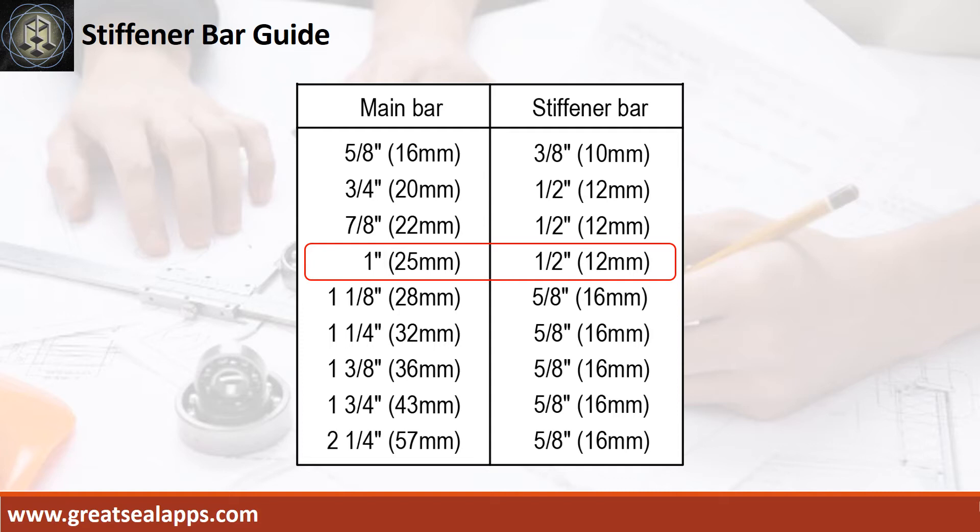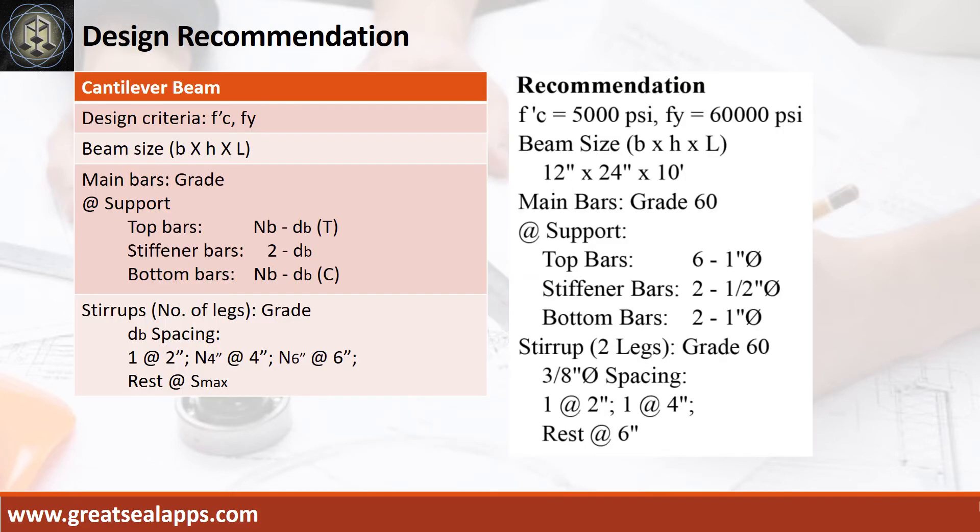For 1 inch diameter main bars, use 1.5 inch diameter stiffener bars. Design recommendation as follows: Fc prime equals 5,000 psi, Fy equals 60,000 psi. Beam size is 12 inches by 24 inches by 10 feet. Main bars of grade 60 at support.